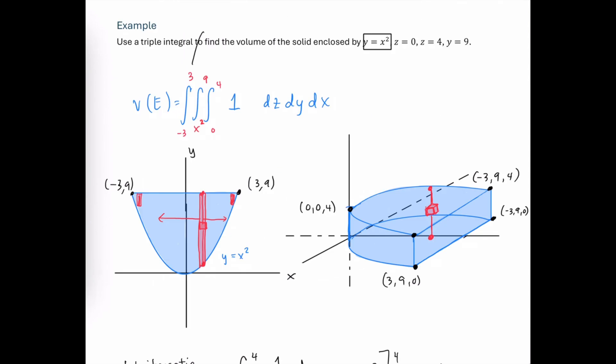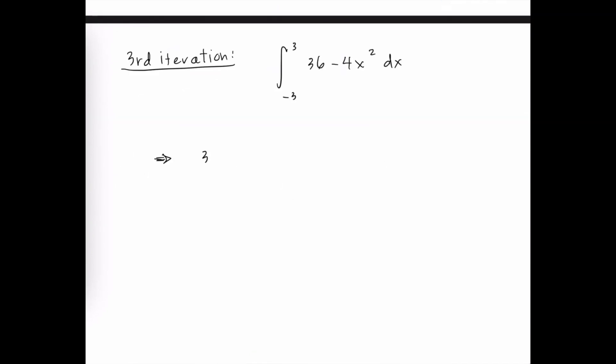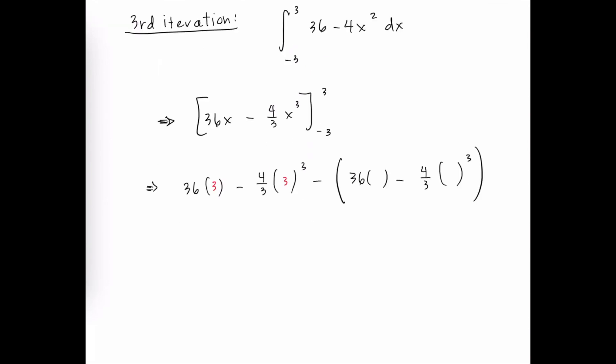Our third iteration is integrated with respect to x from negative 3 to 3. And 36 minus 4x squared is that integrand. Evaluated with respect to x, we get 36x minus 4/3 x cubed evaluated from negative 3 to 3. So let's plug in our upper limit of 3. And then subtract from that our lower limit of negative 3 plugged in. And after we simplify, we get 144.